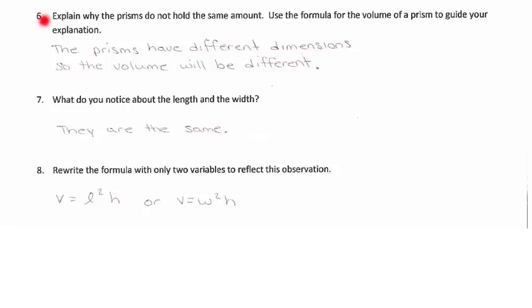For problem number six, explain why the prisms do not hold the same amount. It's because the prisms have different dimensions, so the volume will be different. Number seven, what do you notice about the length and the width? The length and the width, they're both the same. And if you rewrite the formulas with only two variables, the volume would be length squared times height or width squared times height.